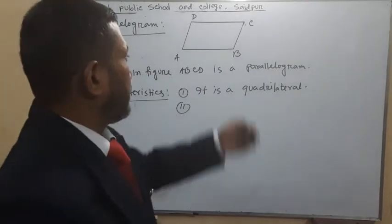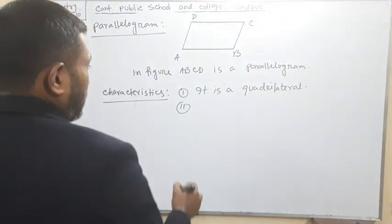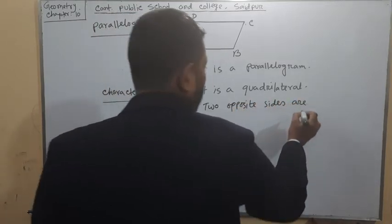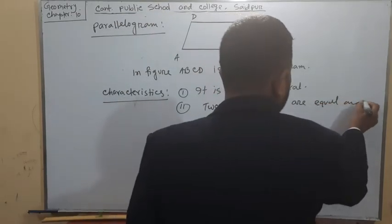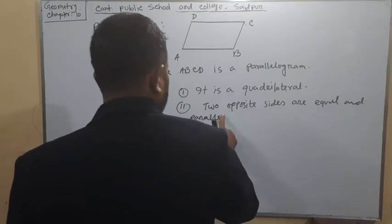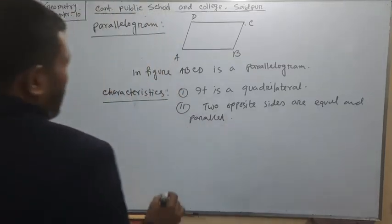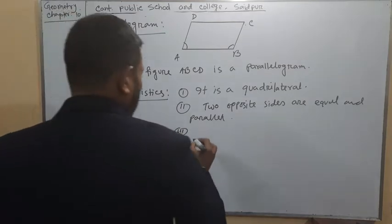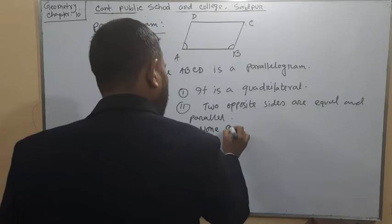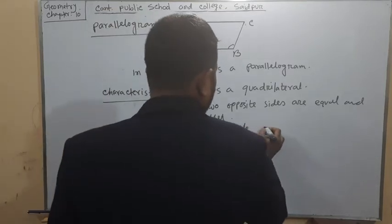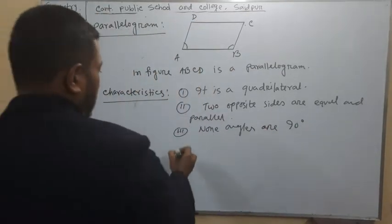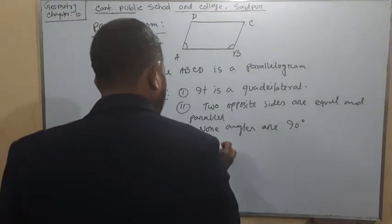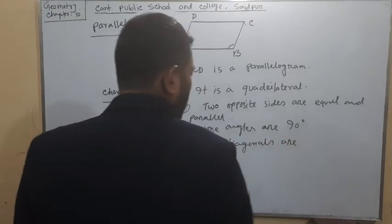The characteristics of a parallelogram: it is a quadrilateral. Two opposite sides — here AB and DC will be equal and parallel. So two opposite sides are equal and parallel. The two diagonals BD and AC will not be equal — two diagonals are not equal.